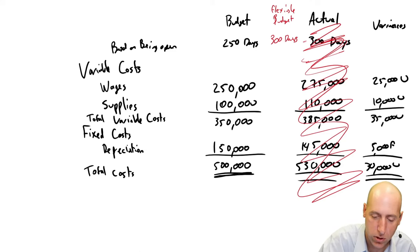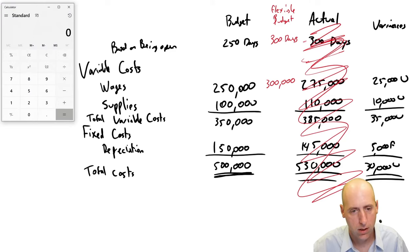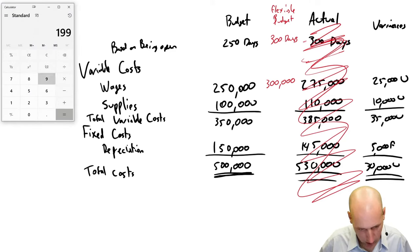So my wages were $250,000 based on 250 days. What would they be based on 300 days? They'd be $1,000 a day. My wages would be $300,000. My supplies, $100,000 based on 250 days. What would that be? I've got to open a calculator to figure out what that would be.